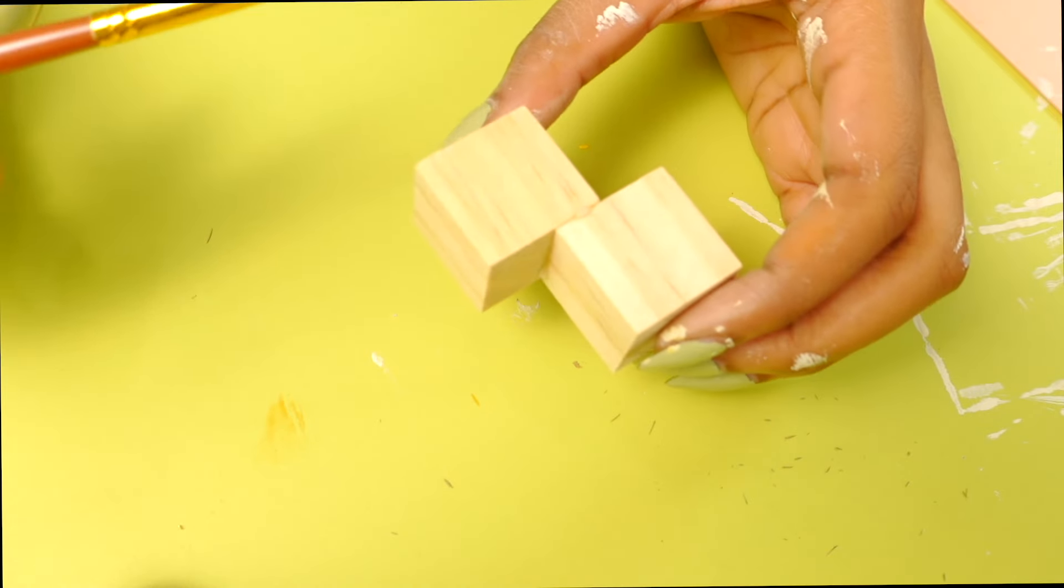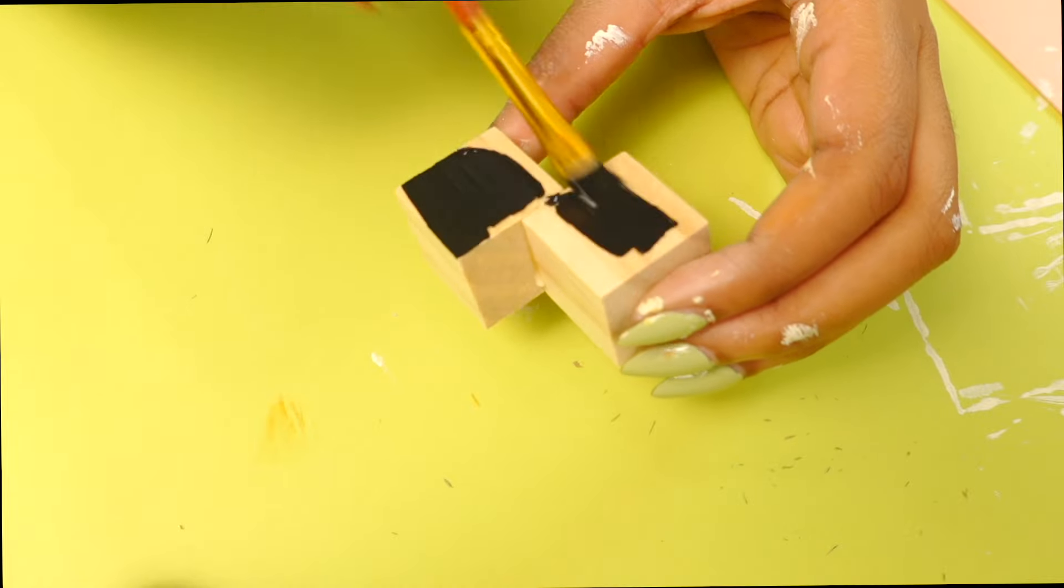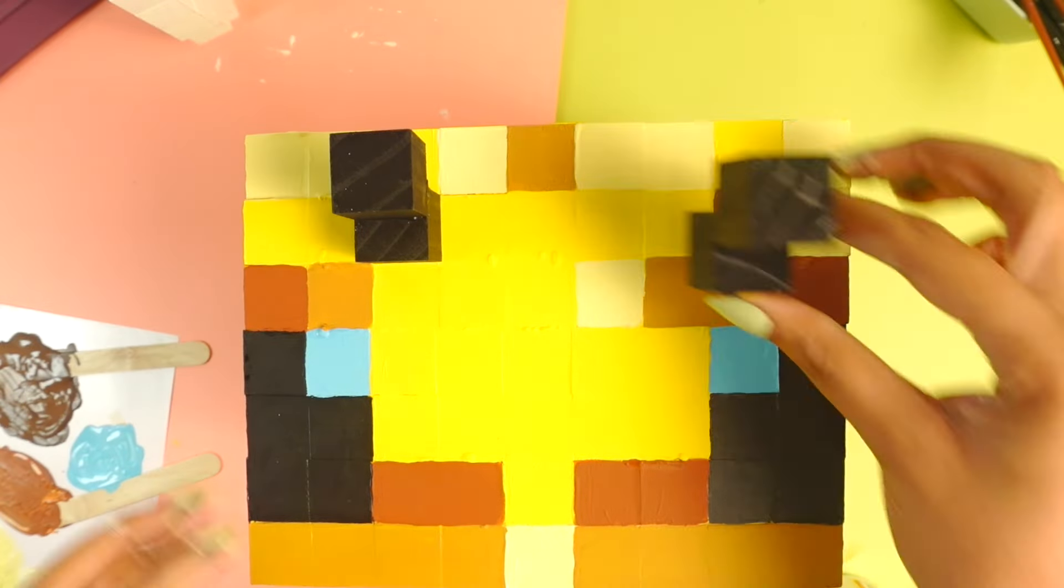In an attempt to make our bee look more bee-like, I made this antenna to go on top of his head. I was going to paint the squares that were there, but I thought it might look better if it were more 3D.